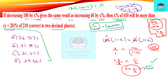Now we calculate: x plus 20 percentage of 210. Since x is 50, we have 50 plus 20 = 70 percent of 210. 70% of 210 is 147. On the other side, x percentage of 410 — 50% of 410 is 205. So 205 is more than 147.